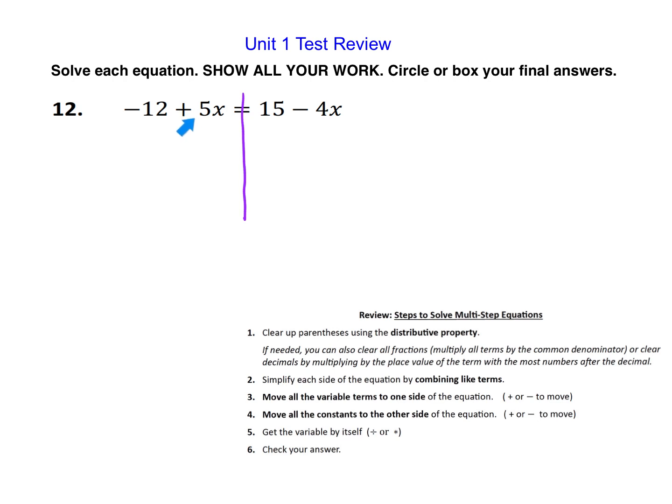Notice over here I have a positive 5x. To move that to the other side, I would have to minus 5x on each side, so we'd do negative 4x minus 5x. Or my other option would be to move this minus 4x to the other side by adding 4x. That's a little easier because if we add 4x, that keeps our variables positive. Now I have negative 12 plus 9x equals 15. We've completed step three, moved all the variables to the same side.